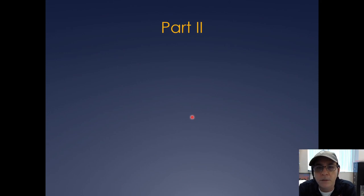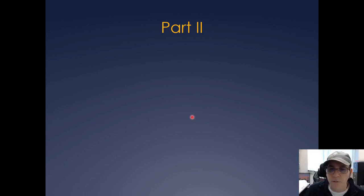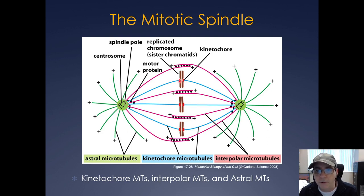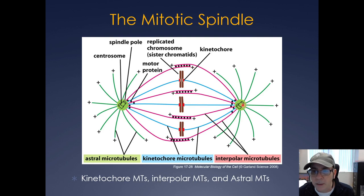We're going to start Part B on the cell cycle, mainly looking at the mechanical aspects and how they're regulated by the cyclin CDKs, the APC/C, and some of the checkpoints. The mitotic spindle consists of a pair of centrosomes with microtubules coming off them: astral microtubules, kinetochore microtubules attached to sister chromatids via the kinetochore, and interpolar microtubules connecting the two centrosomes — each with different roles during the cell cycle.